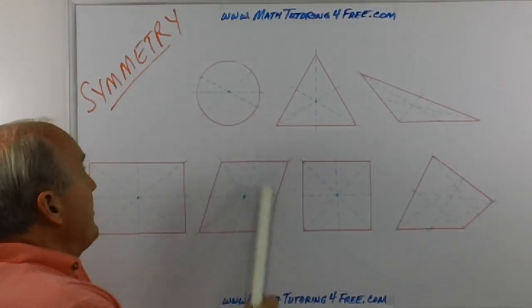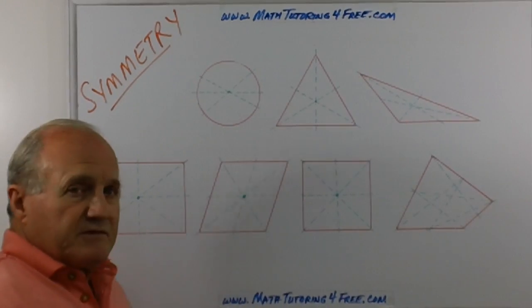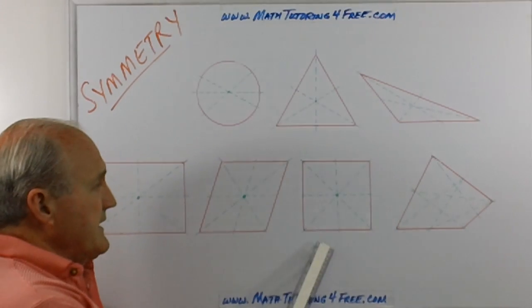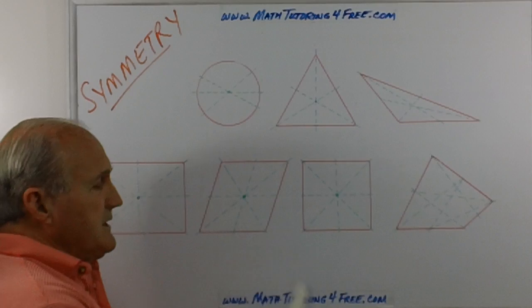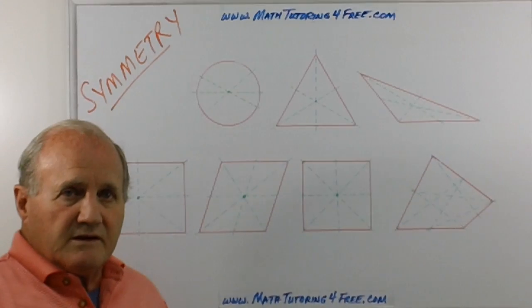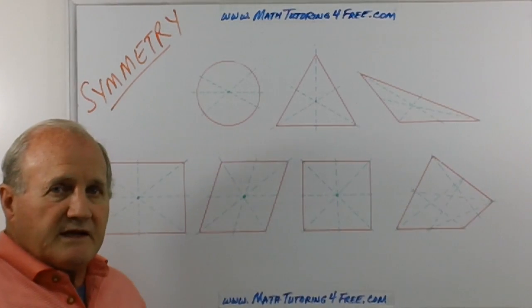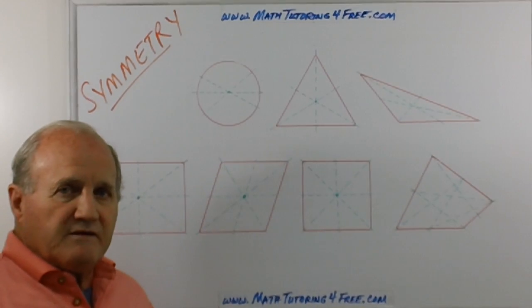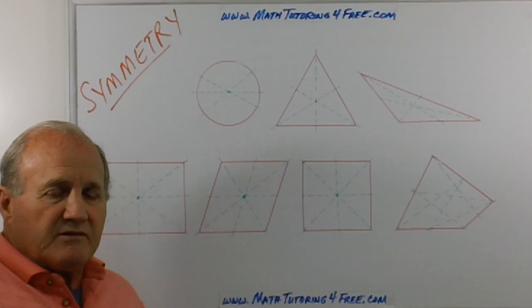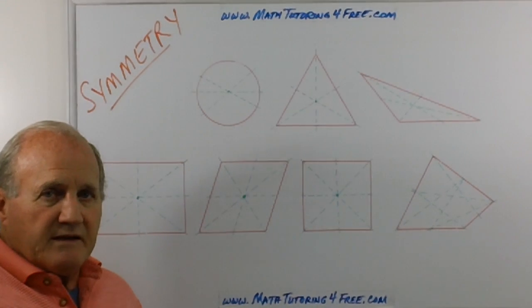So points of symmetry and lines of symmetry are an important concept. Again, when your figures are pretty much equilateral, rectangles, squares, parallelograms, you can have them. Other four or five-sided polygons will probably not have those.